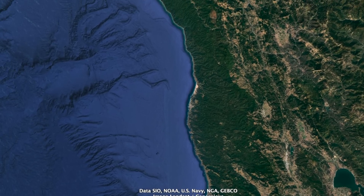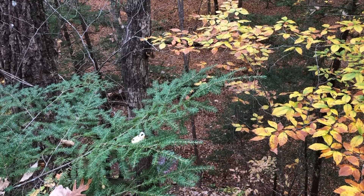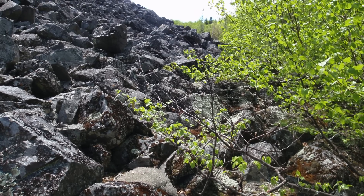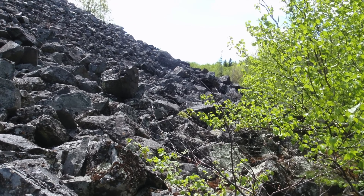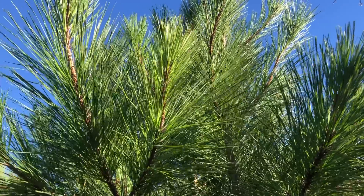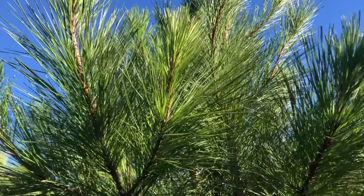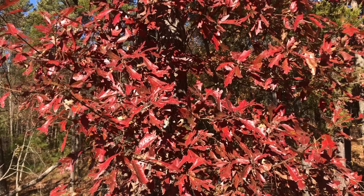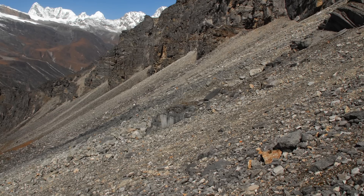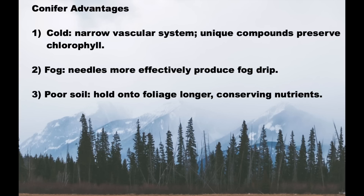Under the redwoods of coastal California, almost a third of the rainfall is actually fog drip from the trees. In tension zones between coniferous and deciduous forests, like the Great Lakes region or the High Appalachians, poor soil lends an advantage to the conifers. On poor soil, natural selection favors plants with a very low biomass turnover rate — they hold on to their foliage for as long as possible to save nutrients. Conifer needles accomplish this to a greater degree than maple or oak leaves, and thin, rocky soil is common in the far north, where past ice sheets have scraped down to the bedrock. So in short, cold, fog, and poor soil tend to favor conifers over angiosperms.